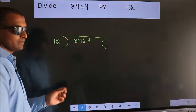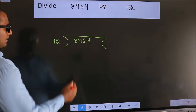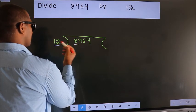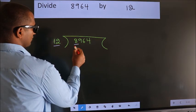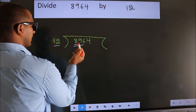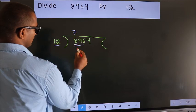This is your step 1. Next, here we have 8, here 12. 8 is smaller than 12, so we should take two numbers: 89. A number close to 89 in the 12 table is 12 times 7, which is 84.